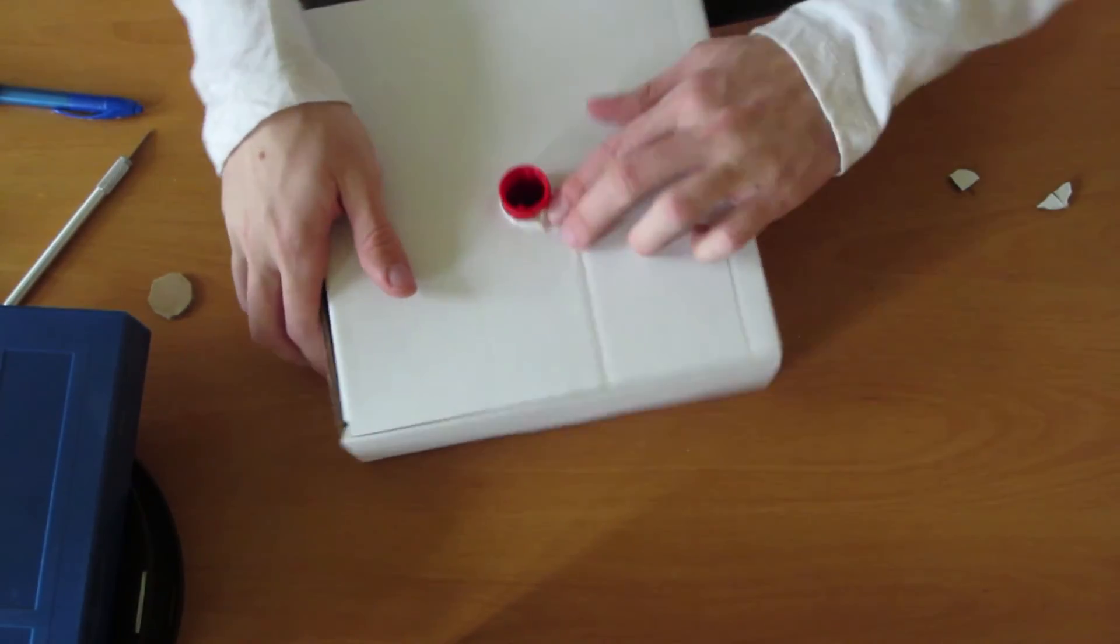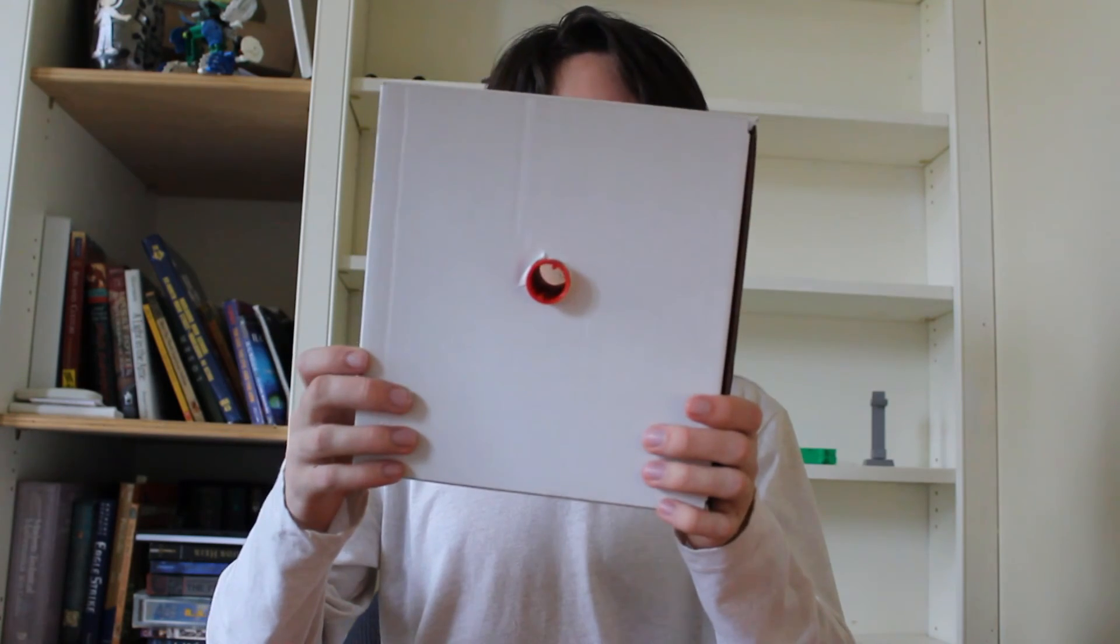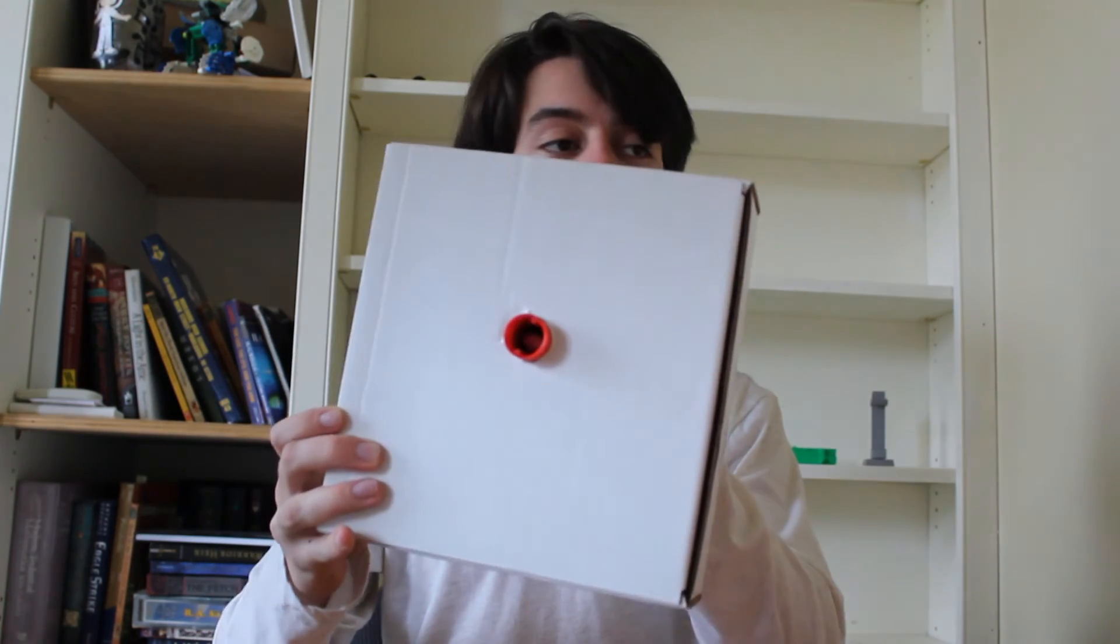So that went through. Made the hole a little bit too small and it ripped a little bit, but we could always just cover up that gap. Next thing we're going to do is take the little feed tube and then put that inside the box.